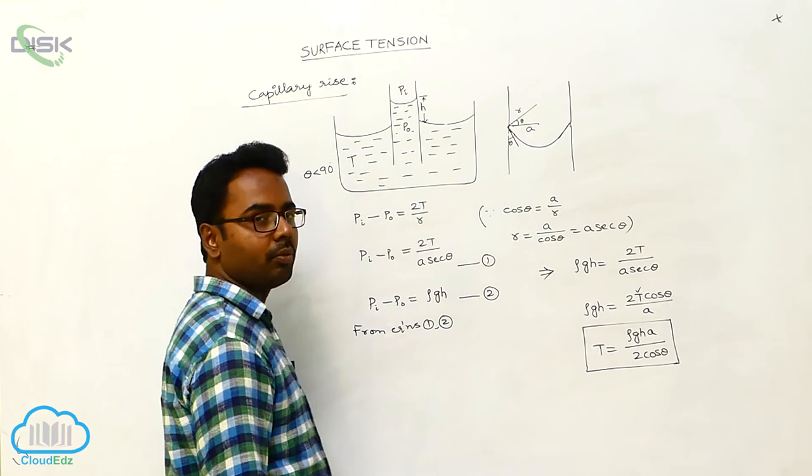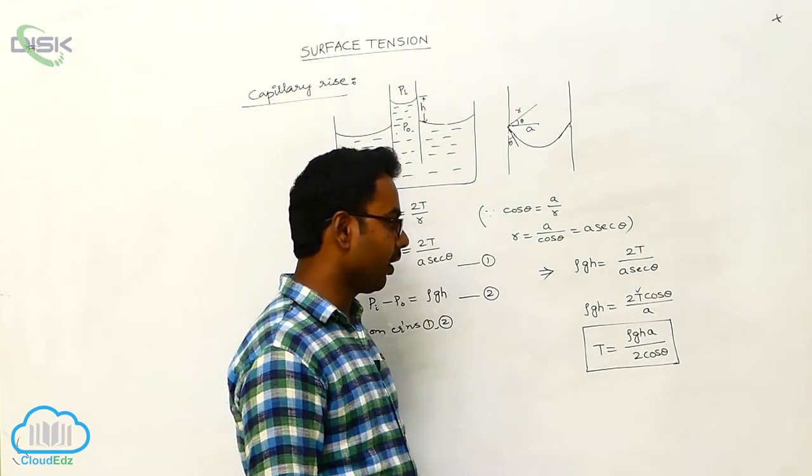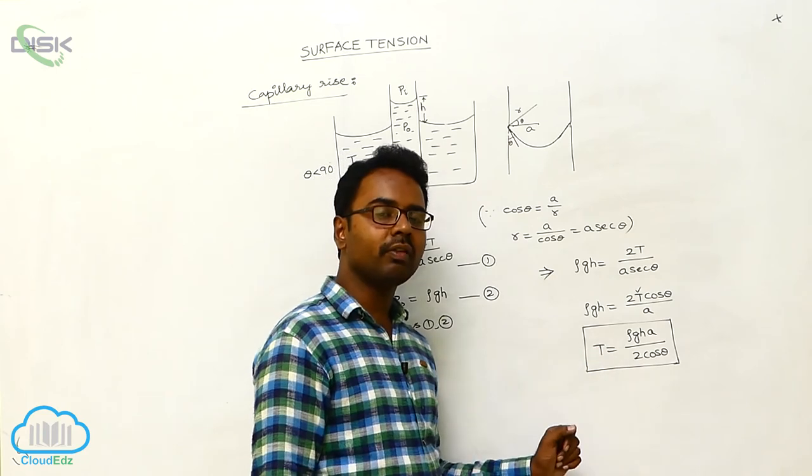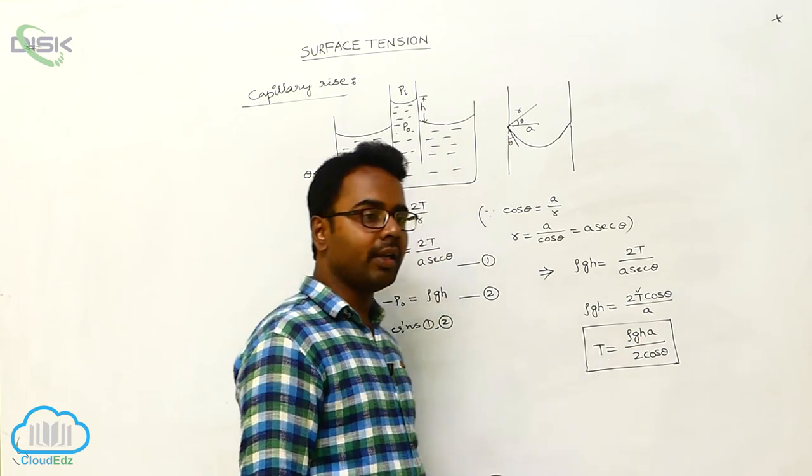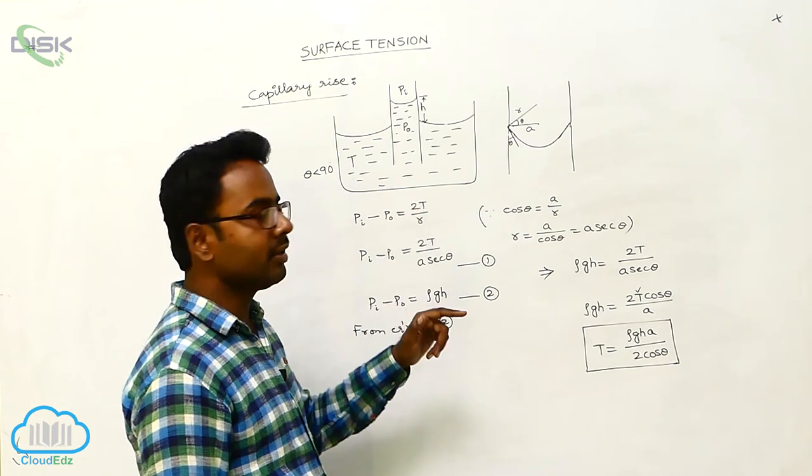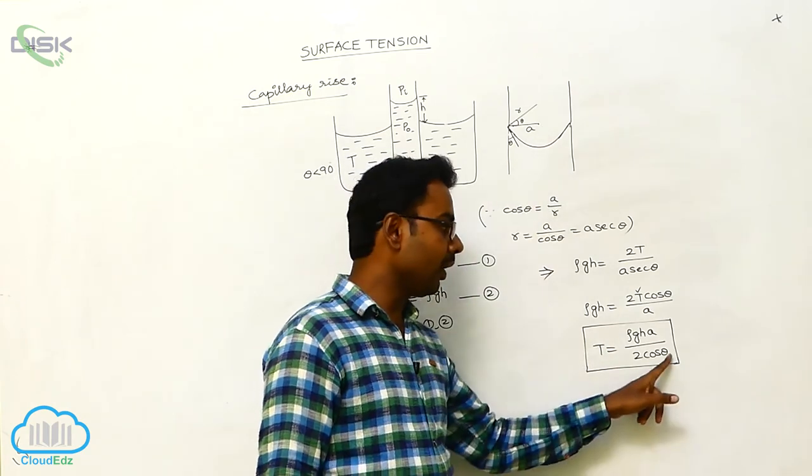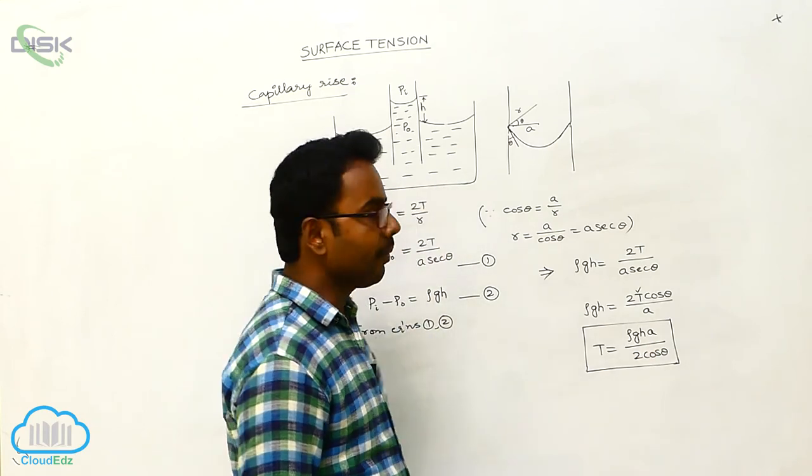Using this formula, we find the surface tension of a given liquid. Rho is the density of the liquid. G is the acceleration due to gravity at a given place. H is the capillary rise, to what height the liquid rises in the capillary tube. A is the radius of the capillary tube, and theta is the angle of contact.